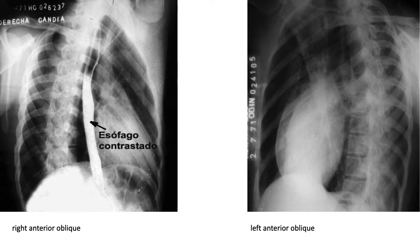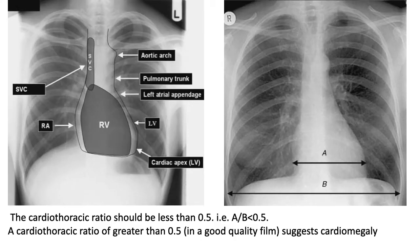You have the two oblique views: right anterior oblique and left anterior oblique. These are from the old school — we are not using them anymore because of echocardiography. Now let's recap the anatomy of the heart. On the right side you have the right atrium and superior vena cava. In the middle of the heart we have the right ventricle. On the left side, from top to bottom, we have the aortic arch, pulmonary trunk, left atrial appendage, left ventricle, and cardiac apex.